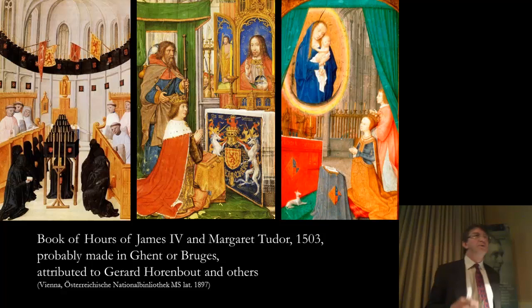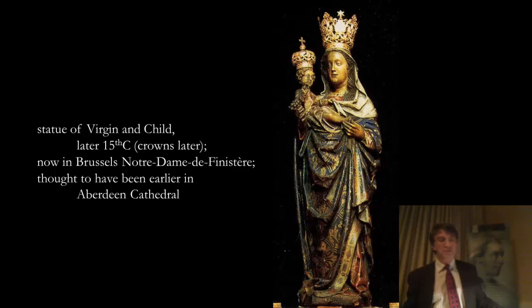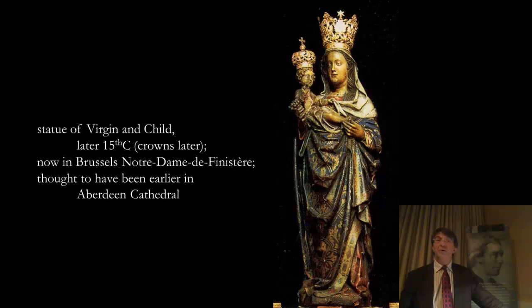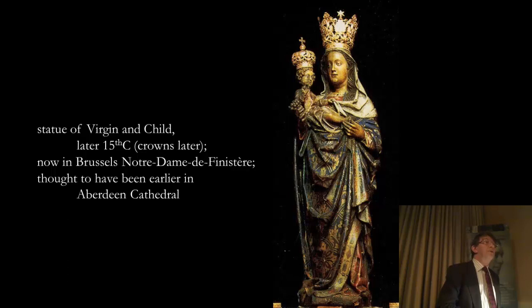This is a reminder of what the collegiate churches that we've been talking about were founded for. Their main function was to pray for the salvation of the people who founded them. Just to remind you of one other work of art assumed to have been in Scotland - a Virgin and Child now in Notre Dame de Finisterre in Brussels. The assumption is that it was made in the Netherlands and then imported to Aberdeen, but at the Reformation it was taken back to the Netherlands and ended up in the Church of Notre Dame in Brussels.